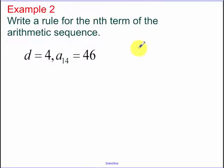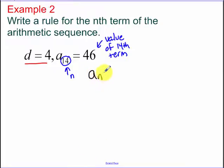Write a rule for the nth term of our arithmetic sequence. I give us d and I give us a sub 14 equals 46. That 14 is telling us our n. That 46 is telling us the value of the nth term. What was that nth term? Our 14th term. So filling into the formula.